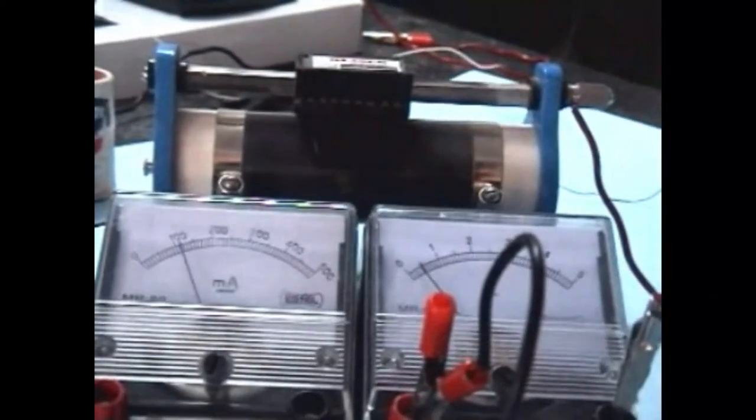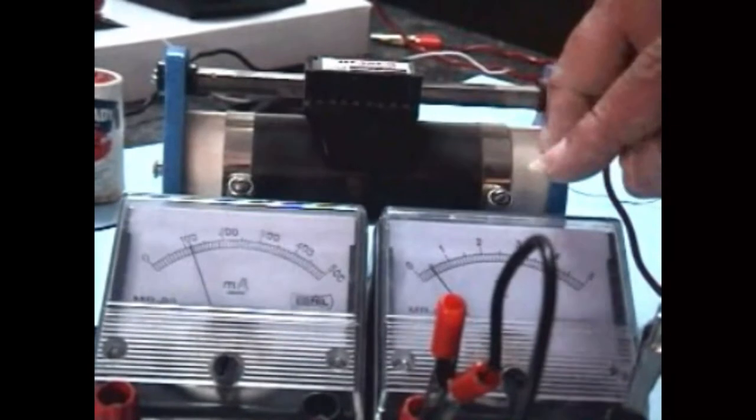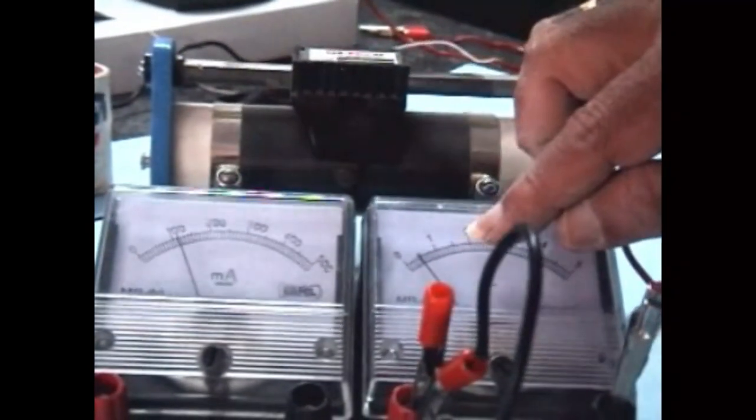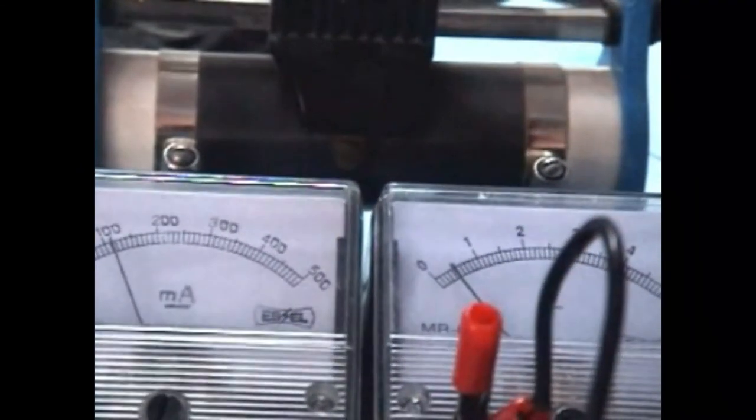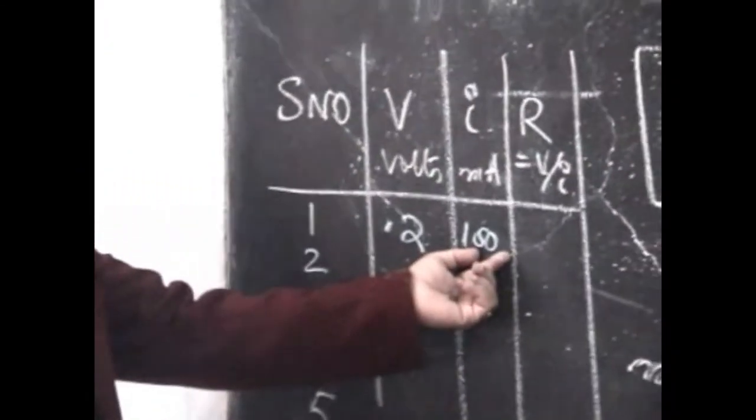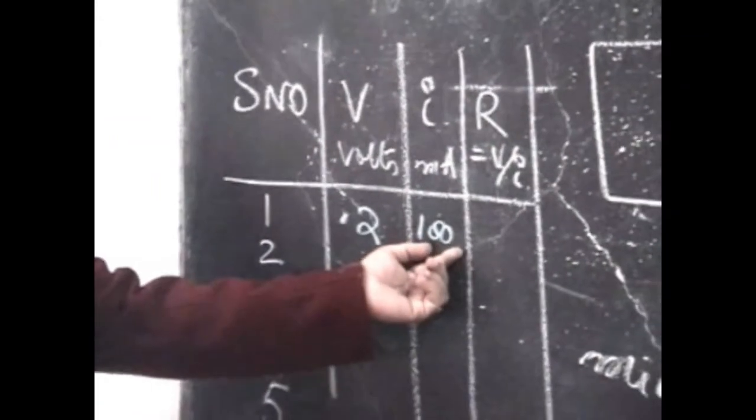the reading of milliammeter is approximately 100 and the reading of voltmeter is 0.2 volt. Whereas the corresponding current is 100 milliamperes.